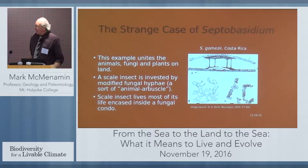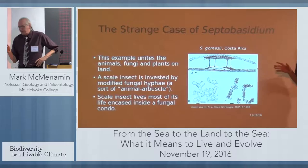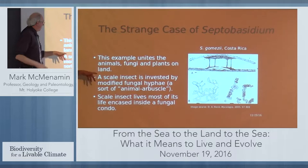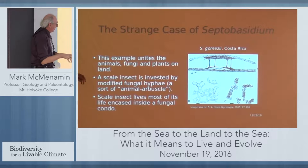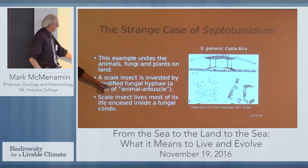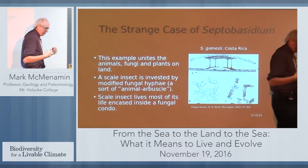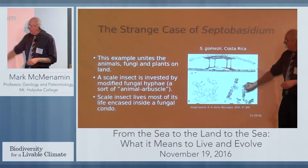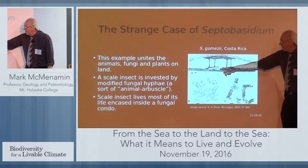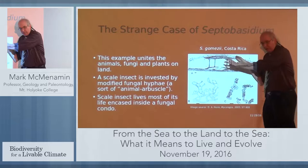Here is the strange case of Septobisidium, which is one of the most interesting cases in Hyper-C. It's an example that unites the animals, fungi, and plants on land. In this situation, you have a scale insect that is invested by modified fungal hyphae — you can sort of think of this as an animal arbuscle. The fungal tendril or hyphae has gotten inside of the insect, so the insect is immobilized but not killed; it's kept alive.